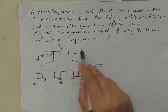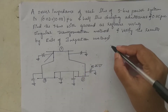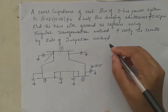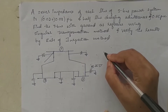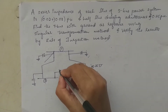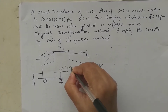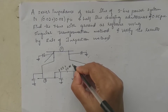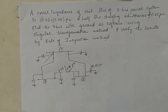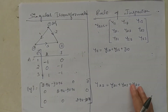If half-line charging admittance is given, take it as is. If line charging admittance is given, divide it by two to get the half-line charging admittance. The network has each line with impedance 0.02 + j0.08 per unit, and we will solve the problem using both methods.